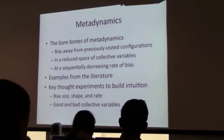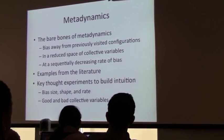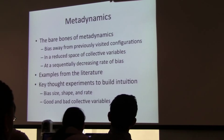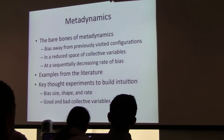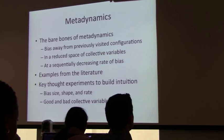The essence of metadynamics can be quickly encapsulated in three lines. You want to bias away from previously visited configurations to stop sampling common events so you can start sampling rare events. You want to do it only in a reduced space of collective variables — so when you say 'an event,' you're talking about a protonation or deprotonation. You don't care which proton it is; you only care about the protonation state.